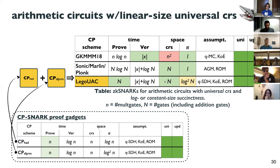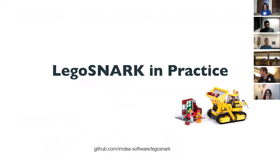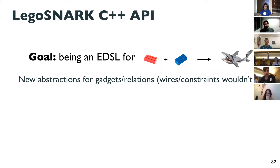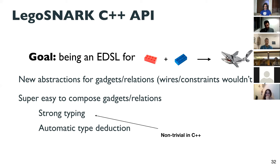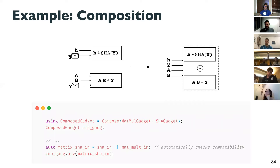We did not implement this scheme because the constants in the asymptotics are not so good. What we did implement are the other schemes. We hope to release the library open source soon. The idea is that once you have this framework, you can build a domain-specific language for SNARKs where you can compose SNARKs automatically if you have strong typing of relations — the library takes care of the composition tier and automatically creates SNARKs for the composition.